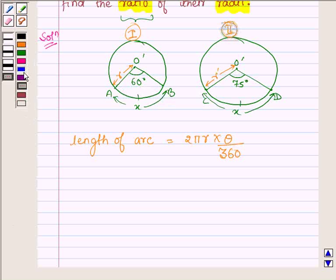So in the first circle, when applying this formula, x, which is the length of arc, equals 2 times pi times r, and theta in the first circle is 60 degrees, upon 360.